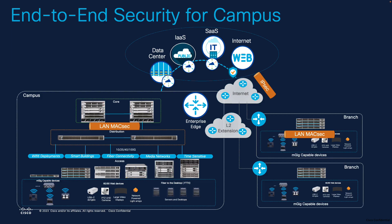Last but not least is the requirement for high-speed or high-bandwidth secure connectivity over a Layer 2 extension — it could be between campuses or between your campus and branch network. That is where WAN MACsec comes in handy, and this is what we will focus on for the rest of the video.